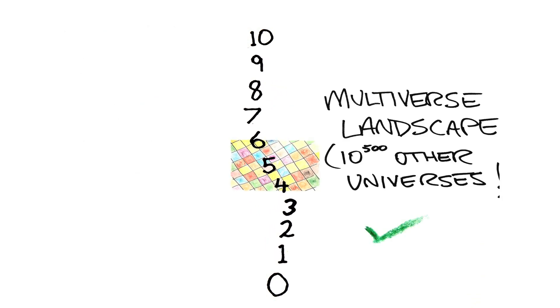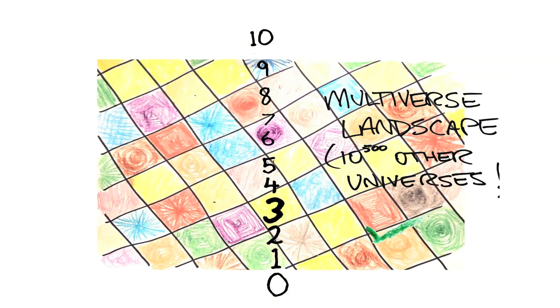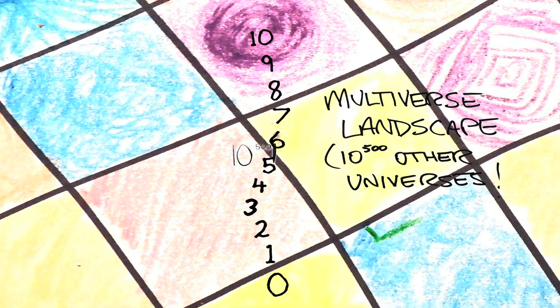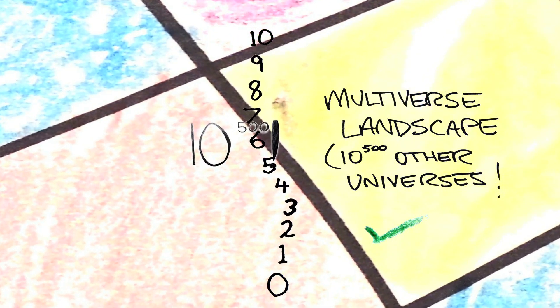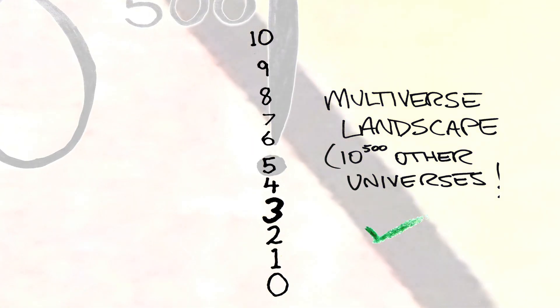Likewise, if string theory predicts that there are a great many other universes that are created from constants that are different from the universe we find ourselves to be in, we need to have visualized that landscape of other completely separate universes by the time we've imagined these ten dimensions.